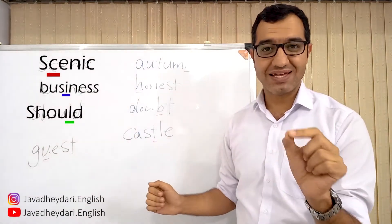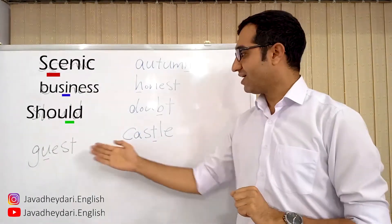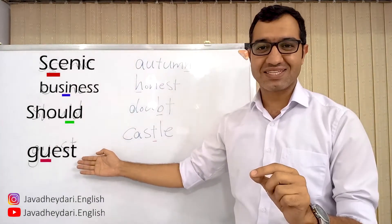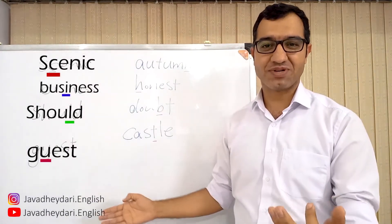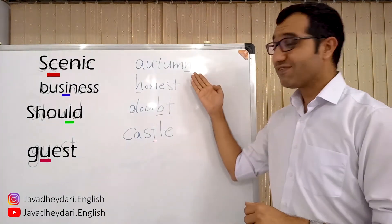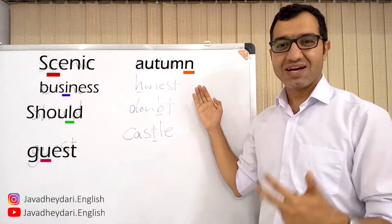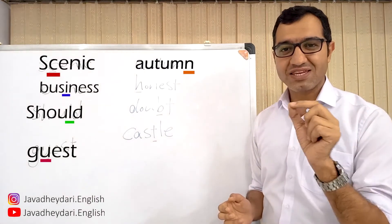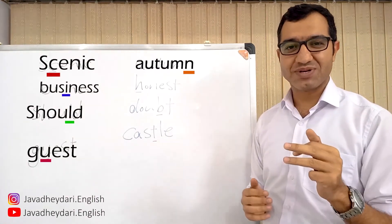Guest — U is not pronounced here. We have autumn — N at the end of the word is not pronounced.